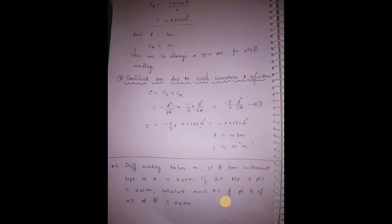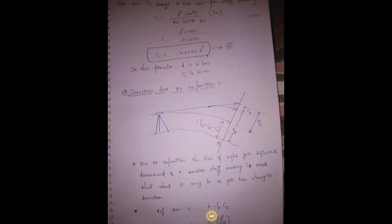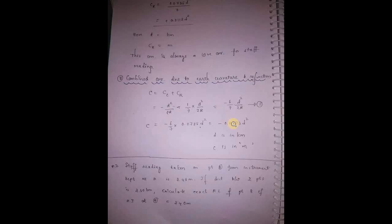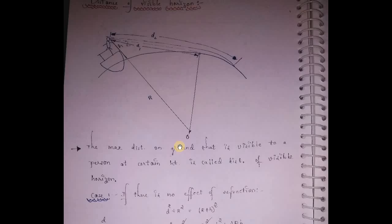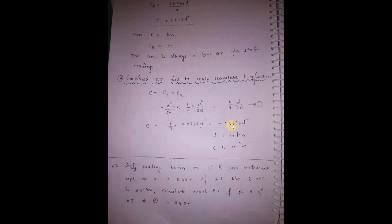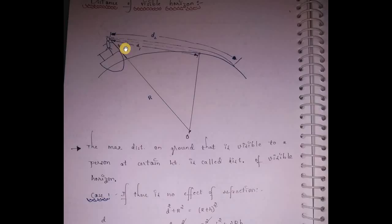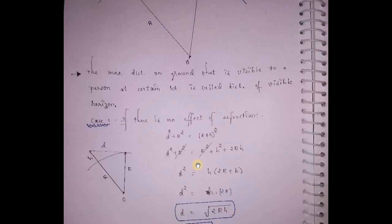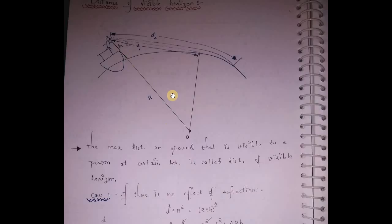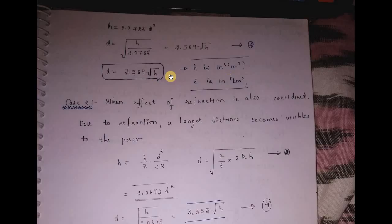The combined correction height H is equal to D squared by 2R. The formula gives D equal to 3.56 into root H, where H is in meters and D is in kilometers.